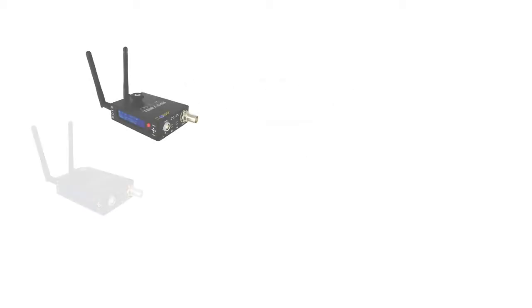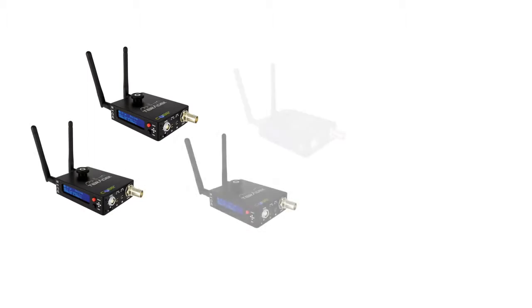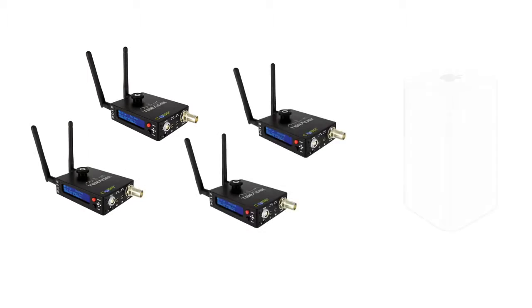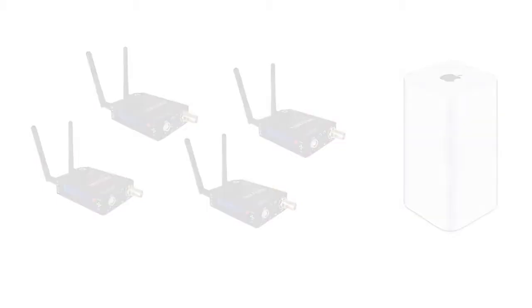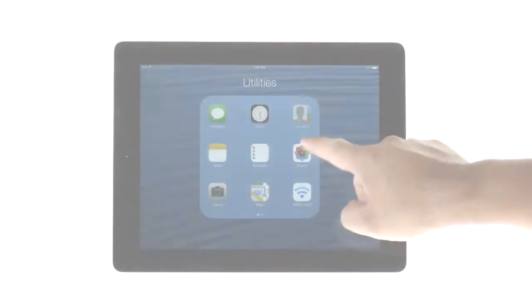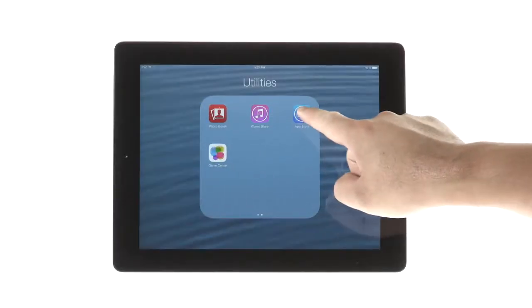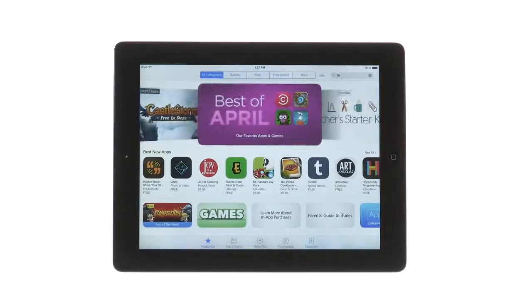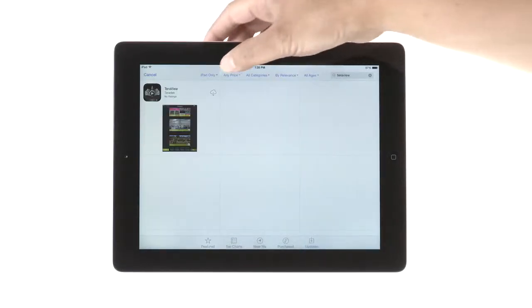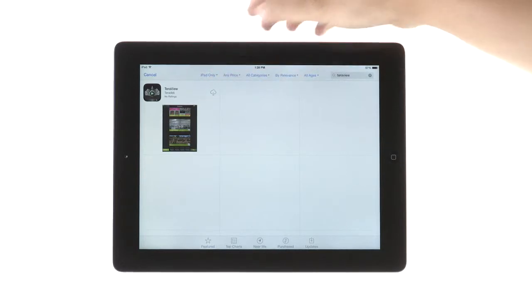In this tutorial, we have our devices in Infrastructure Mode connected to an Apple Airport Extreme Router, which creates our local area network. If you want to connect to your Teradek device directly, please see our Teradek AP Mode tutorial.